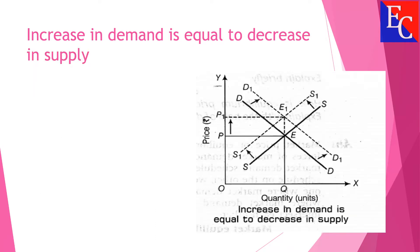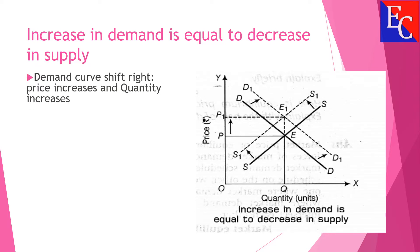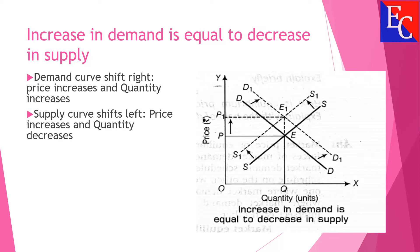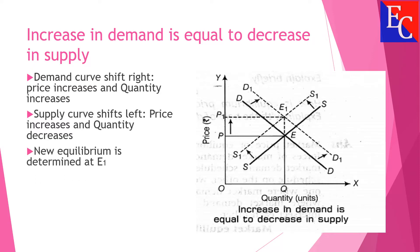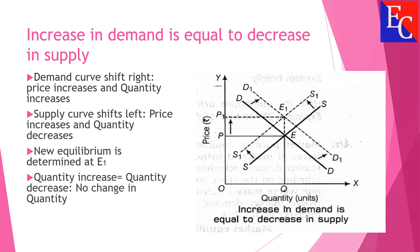Increase in demand is equal to the decrease in supply. Due to the increase in demand, the demand curve shifts to the right — price increases, quantity increases. Due to the decrease in supply, the supply curve shifts to the left — price increases and quantity decreases. The new equilibrium is determined at E1.